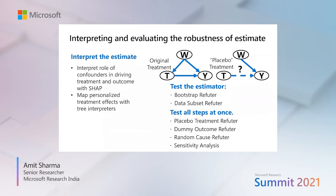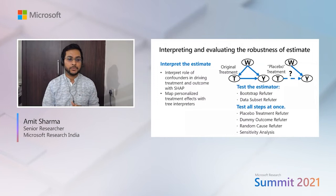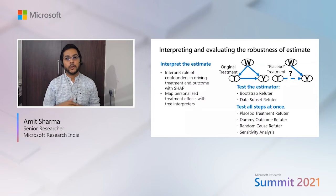This brings us to interpreting and evaluating the robustness of an estimate. Remember, we don't have cross-validation or something as simple as in predictive models where you can immediately know how good your model is. You need a multi-pronged approach to look at what the model is doing and inspect it with your domain knowledge. We would first want to interpret the estimate, interpret the role of confounders in driving treatment and outcome with SHAP, and also look at the personalized treatment effects. Our libraries provide a tree interpreter for you to look at the policy and how it's doing for different sets of people.